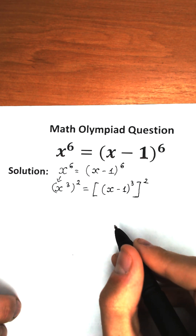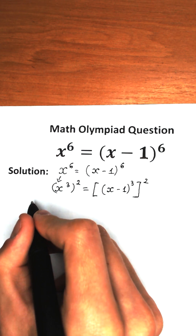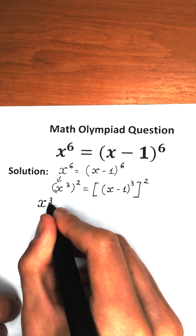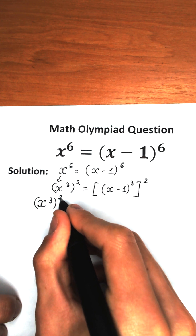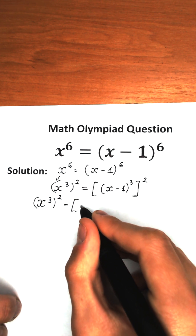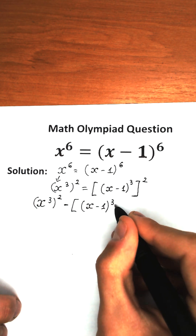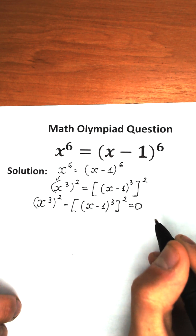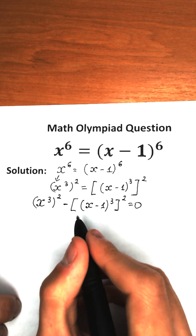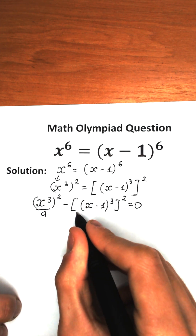Now I suggest bringing the right-hand side expression to the left-hand side. So we have x cubed squared minus x minus one cubed, all squared, equal to zero. If you look closely, we now have a difference of squares — here we have 'a' and here we have 'b'.